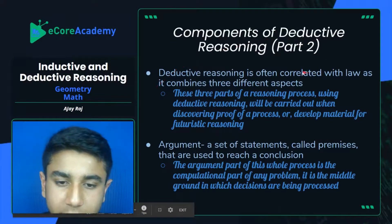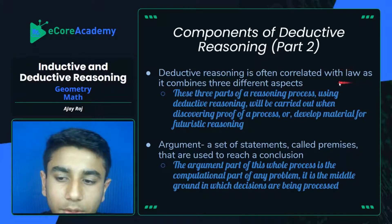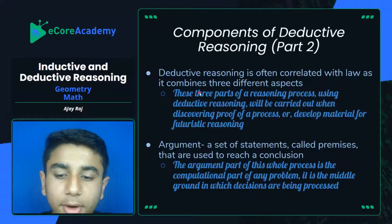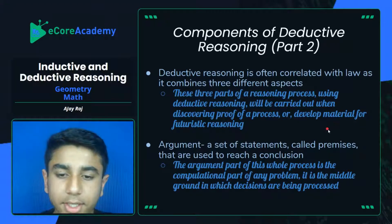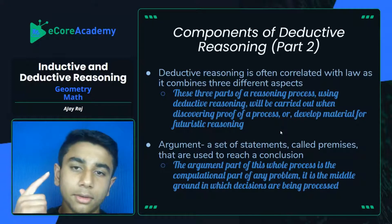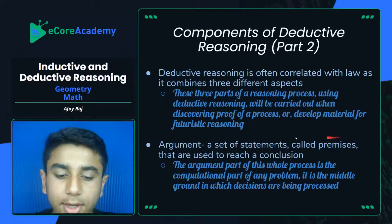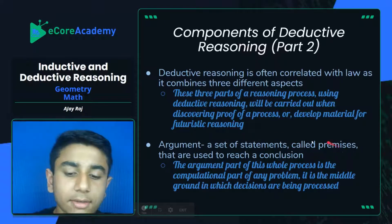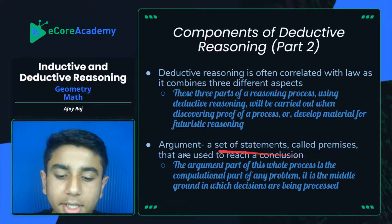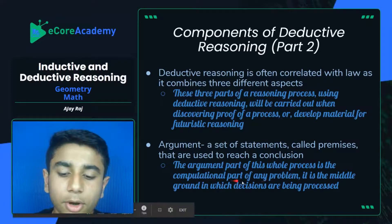Deductive reasoning is often correlated with the law and the judiciary process, as it combines three different aspects. If you're a lawyer, you might already be aware of this. These three parts of a reasoning process using deductive reasoning are: the argument, the premises, and the conclusion. You'll most likely have multiple premises. The argument is a set of statements called premises that are used to create a conclusion. In the judiciary process, the argument is the whole computational process of any problem.